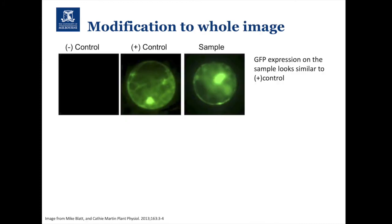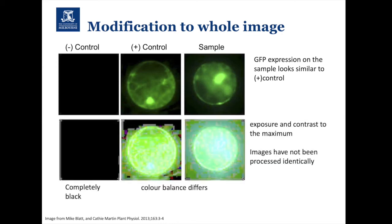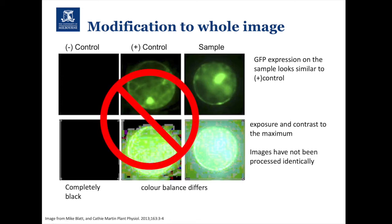Here's another example I quite like: we have a sample, a positive control, and a negative control — hopefully used to set up the acquisition settings. But if we do a simple contrast adjustment, the negative control is completely black. You will never get a completely black image off a microscope — there's always some electronic noise from the detector contributing some intensity. You can also see the background differs between the positive control and the sample, suggesting these images may have been acquired differently or treated differently in terms of visualization. So again, not ethical.